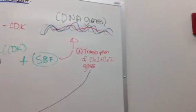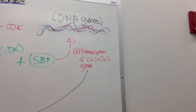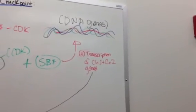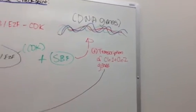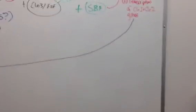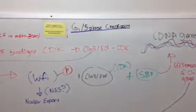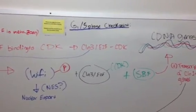This is caused by a buildup of transcription of cyclin 1 and cyclin 2 genes. That is the G1 to S phase checkpoint.